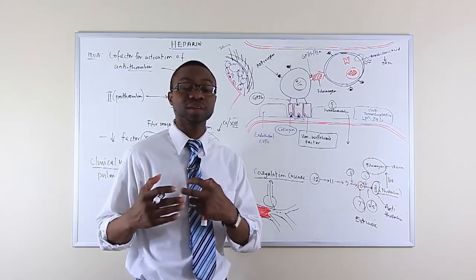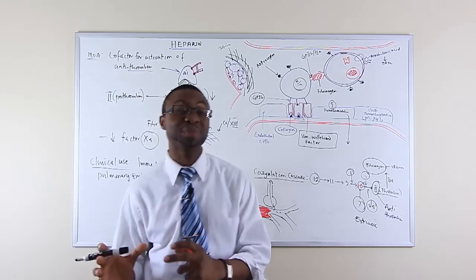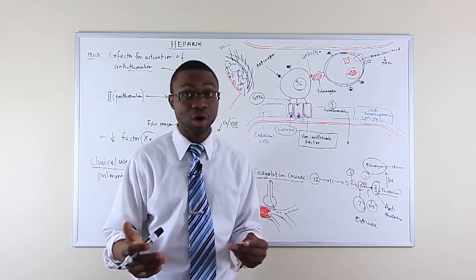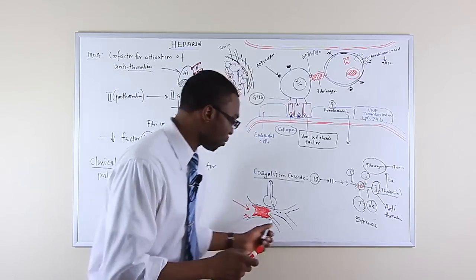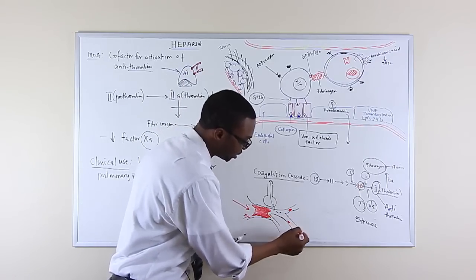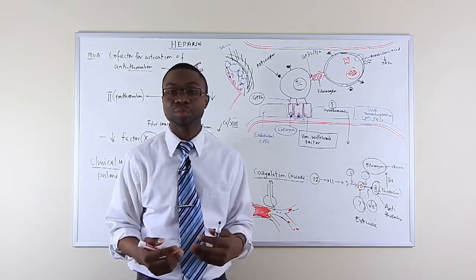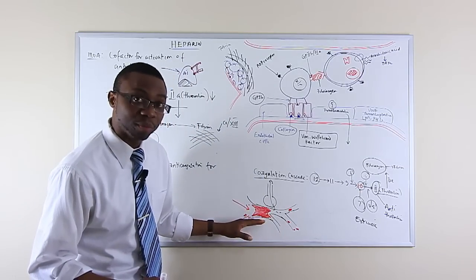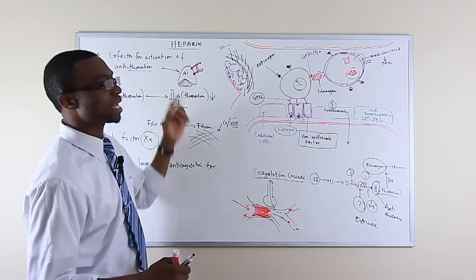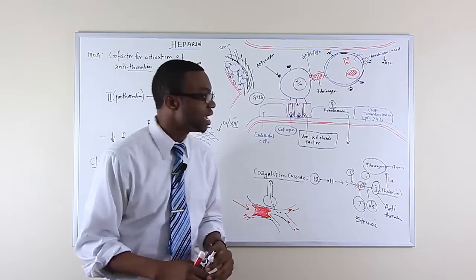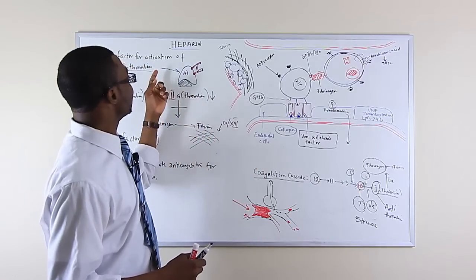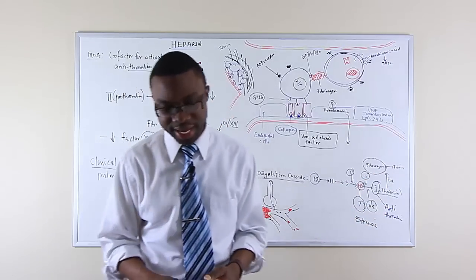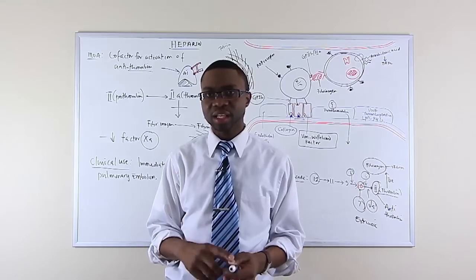If a large clot obstructs the pulmonary vessels, the right ventricle pushes against it, causing right heart strain, and the patient can go into ventricular fibrillation. To prevent propagation of more clot, you give the patient heparin to anticoagulate their blood — decreasing the amount of thrombin, activating antithrombin, producing less fibrinogen and less clot formation. That is the first indication for heparin.